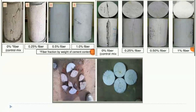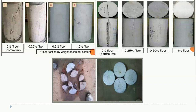Looking at concrete cylinders tested at different fiber percentages: at 0 percent fiber, significant cracks develop once load is applied. At 0.25 percent, small hairline cracks are visible; at 0.5 percent, some cracks appear; whereas at 1 percent, you will not see any cracks — even if cracks exist, they are very minute. This demonstrates that fibers act as crack arresters, improving resistance to cracking.